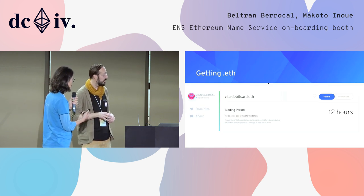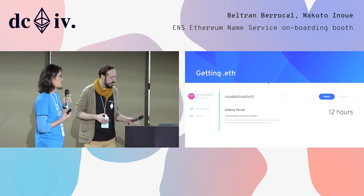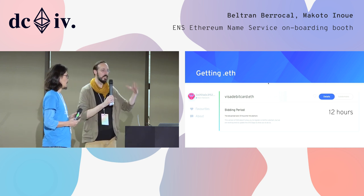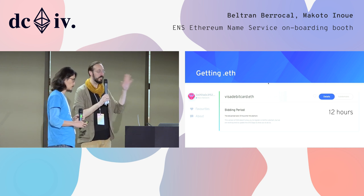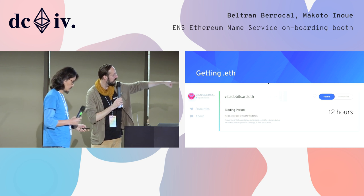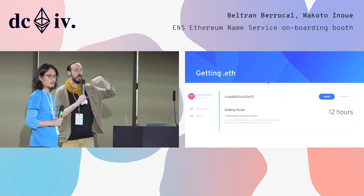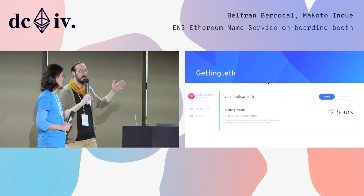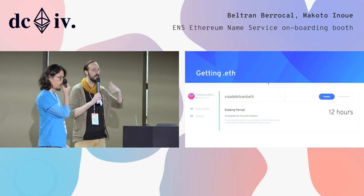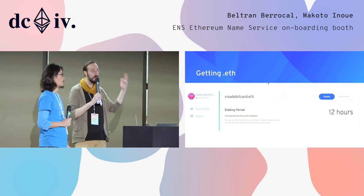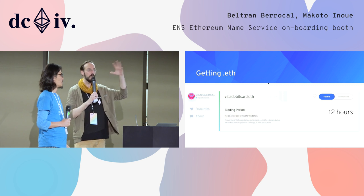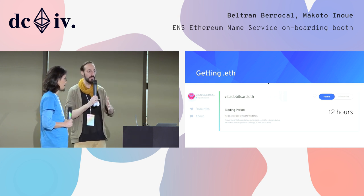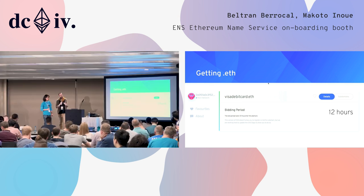During the bidding process it shows how many hours are left. This is the interface of the new manager — we're still working on it. For example, this domain is inside the bidding period, so anybody could bid for it. This is a very complicated process. Almost everybody has had problems with this — lost money, forgot to reveal, forgot to bid. So if you have problems, either come talk to us or follow the instructions very carefully if you want to buy it now. But Makoto is going to show us a simpler version today.